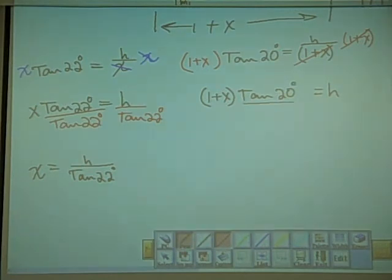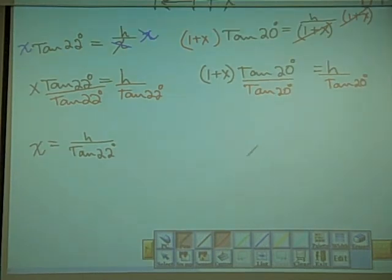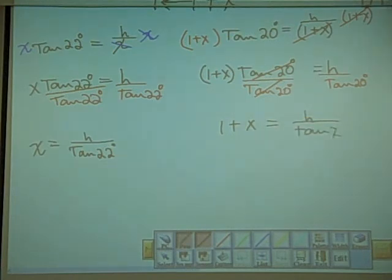So what we can do now here is we can solve for x. We can divide both sides by tangent 20. Divide by tangent 20. And we get, of course these two cancel. We get 1 plus x equals to h over tangent 20 degrees.